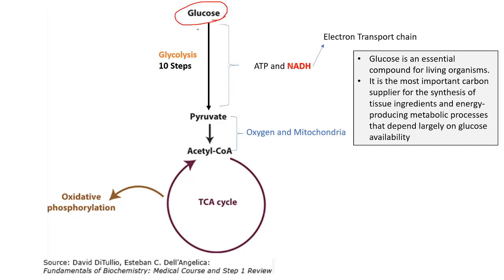In this metabolic diagram we can see glucose being converted to pyruvate in a process called glycolysis. During this process, ATP and NADH are produced, although the amount of ATP produced is quite small. The NADH goes to the electron transport chain for further energy production. If mitochondria and oxygen are available, pyruvate is converted to acetyl-CoA, which enters the Krebs cycle (TCA cycle), leading to higher energy production via oxidative phosphorylation.